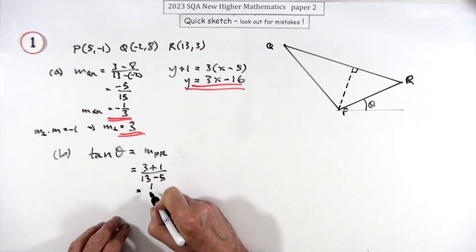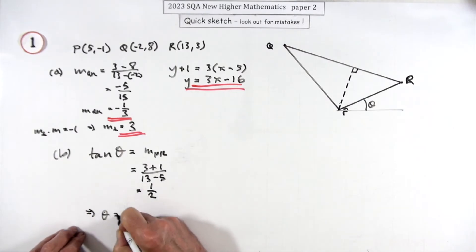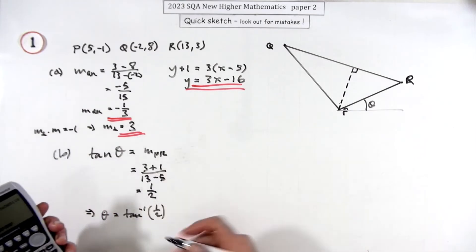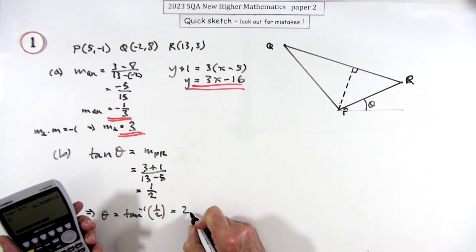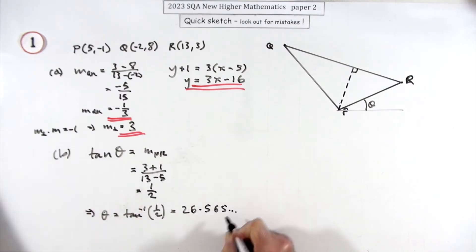So it's a 4 over an 8, which is a half. Which means that the angle is going to be the inverse tan of a half or 0.5. Popping that in gives you 26.56 and so on. I'll just put over here 26.565 and so on. So this angle is going to be 26.6 degrees.